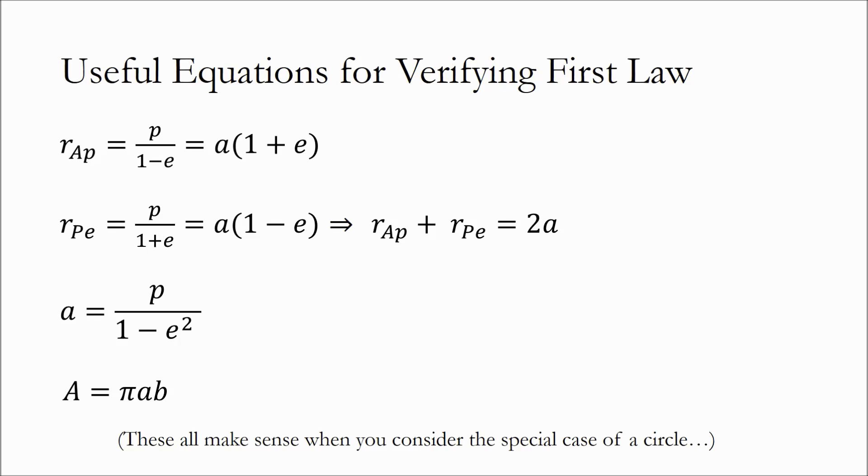This first quantity is the apoapsis distance, or the point on an ellipse furthest away from the focus. This second quantity is the point on an ellipse closest to the focus, or the periapsis. I think it was KSP YouTuber legend Scott Manley who came up with a handy mnemonic device to remember these. At apoapsis, you're afar from the surface, and at periapsis, you're perilously close.